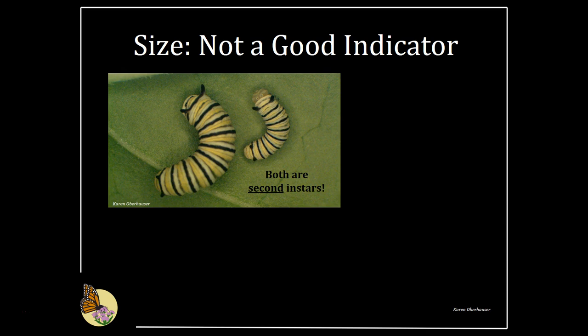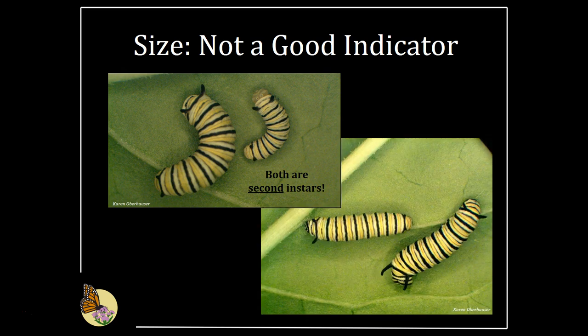Both second instars shown here have rear tentacles that are visible but just small knobs. The one that has recently molted has an opaque head capsule that hasn't finished molting quite yet. The larvae on the left is a second instar — its tentacles would not reach the tip of its head if folded down. The one on the right is a third instar — those tentacles would reach the tip of its face if folded down. Notice they are nearly the same size, illustrating why size is not a good indicator of instar. Always look at tentacle length.